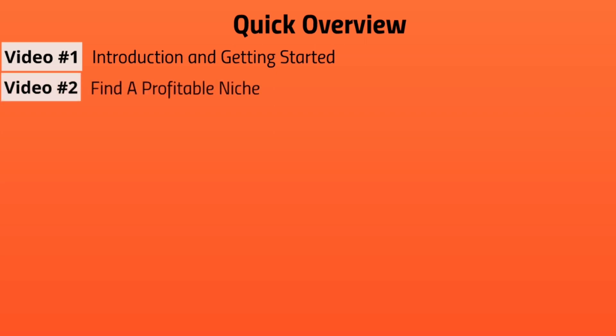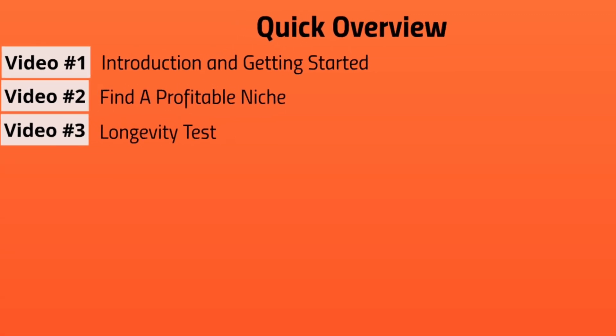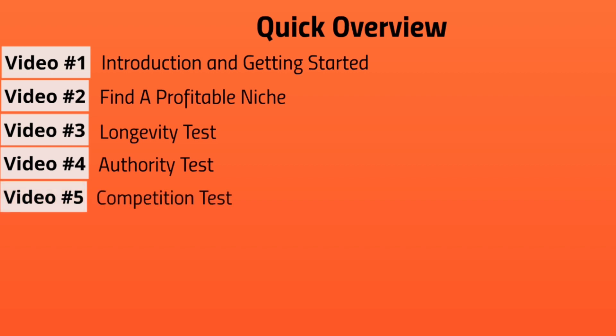Video number two is find a profitable niche — we're going to do some brainstorming. Video number three, we'll do the longevity test to make sure that niche can last for decades. Video number four is the authority test to make sure you are indeed the authority. Video number five is the competition test to make sure you have enough competition, and video number six is the product test to make sure everything is going to be profitable in the long run.